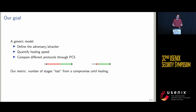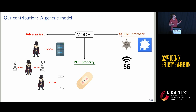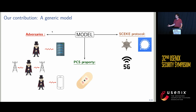Our metric counts the number of messages that are lost. Our main contribution is a framework to analyze protocols with post-compromised security. The security model has three parts: first, the definition of the protocol using what we call a CK protocol for secure channel establishment with key evolution, which is a generic description covering many protocols with PCS properties. Second, the security properties — here, specifically PCS. Third, we define the adversaries: what they do, when, and how.